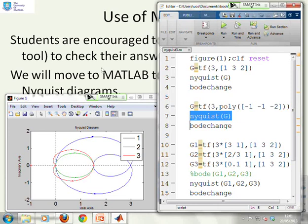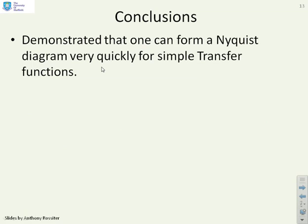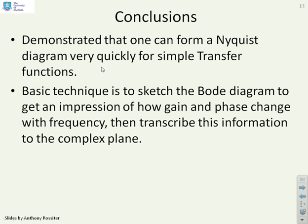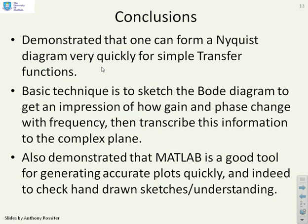In conclusion, we've demonstrated you can form a Nyquist diagram very quickly for simple transfer functions. The basic technique is to sketch the Bode diagram — a very crude sketch — to get an impression of how gain and phase change, and then transcribe this information into the complex plane. We've also demonstrated that MATLAB is a good tool for generating exact plots quickly, and you can use it to check your hand-drawn sketches and understanding.